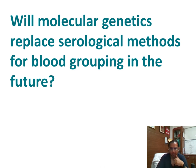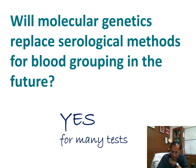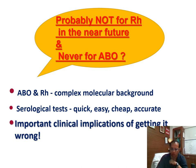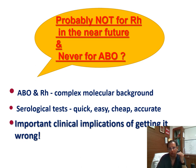Will molecular genetics replace serological methods for blood grouping in the future? Yes, for many systems, but not for Rh or ABO, because these systems have complex molecular backgrounds with silencing mutations. Serological tests are quick, easy, cheap, and accurate. You need to know the pros and cons before implementing any technology, and apply it where it is truly needed.